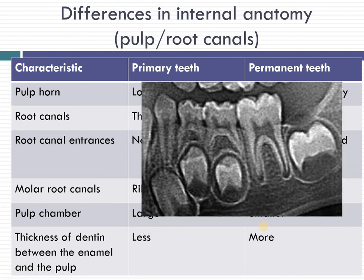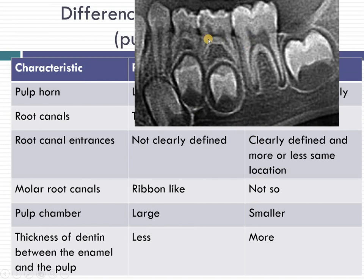The root canal entrances are not clearly defined in deciduous teeth, making access for root canal cleaning more difficult. In permanent teeth the entrances are very clearly defined. The molar root canals in deciduous teeth are thin and ribbon-like, whereas in permanent teeth they are a nice tube-like structure. The pulp chamber is proportionally very large compared to the size of the tooth in primary teeth, and the thickness of dentine between enamel and pulp is much lesser, leading to higher risk of pulp exposure during cavity preparation.